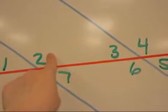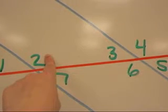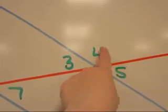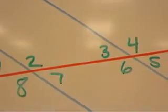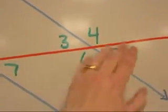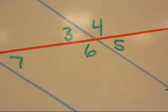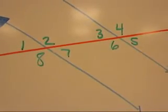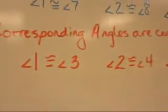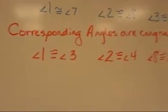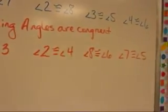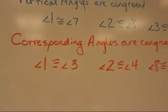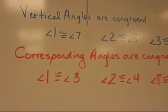Who's corresponding to angle 2? Angle 2 is above the transversal and to the right of the parallel. Angle 4 is above the transversal and to the right of the parallel. So 2 and 4 must be corresponding angles, which means 7 and 5 — which are both below the transversal and to the right of the parallel lines — must also be corresponding. Corresponding angles are also congruent: angle 1 congruent to angle 3, angle 2 congruent to angle 4, angle 8 congruent to angle 6, and angle 7 congruent to angle 5.